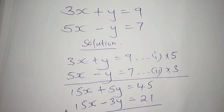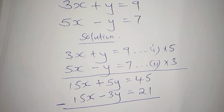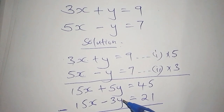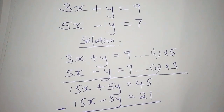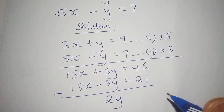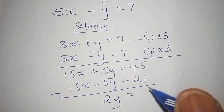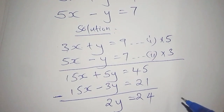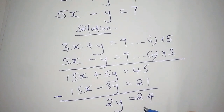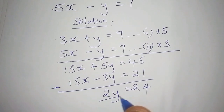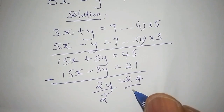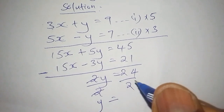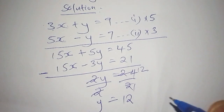From there we shall subtract. Because we've eliminated the 15x terms, those become 0. We automatically move to 5y subtract 3y, which gives us 2y. So 2y is equal to 45 minus 21, which is 24. Because we want to remain with y, we divide both sides by 2, and y is equal to 12.